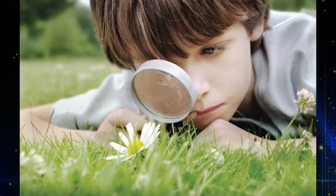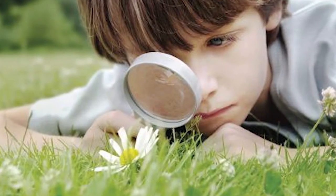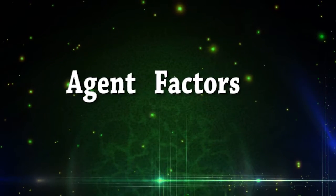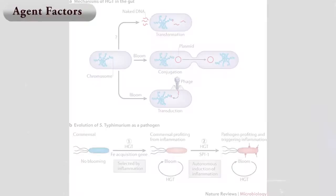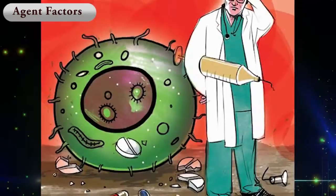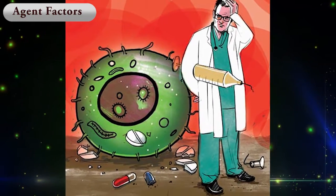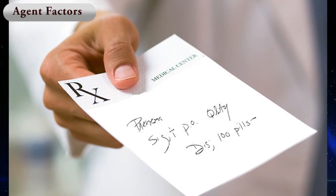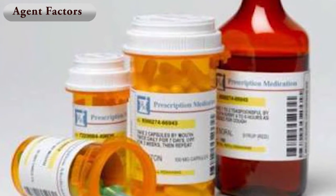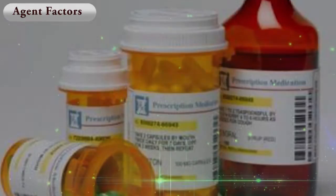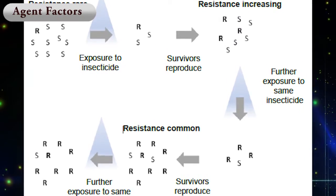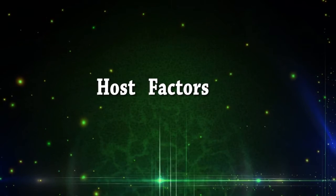Agent factors contributing to emerging diseases include evolution of pathogenic infectious agents and development of resistance to drugs because of wrong prescribing practices, counterfeit drugs, use of anti-infective drugs in animals and plants, and resistance of vectors to pesticides.